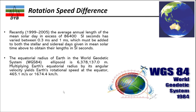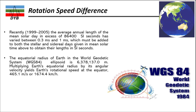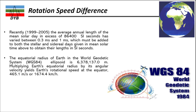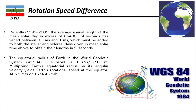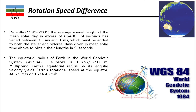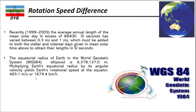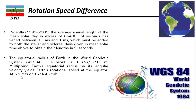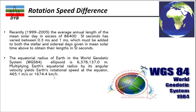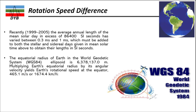The equatorial radius of Earth in the World Geodetic System WGS 84 ellipsoid is approximately 6,378,137 meters. Multiplying this equatorial radius by Earth's angular velocity gives Earth's rotation speed at the equator, which is 465.1 meters per second, or equivalently 1,674.4 kilometers per hour.